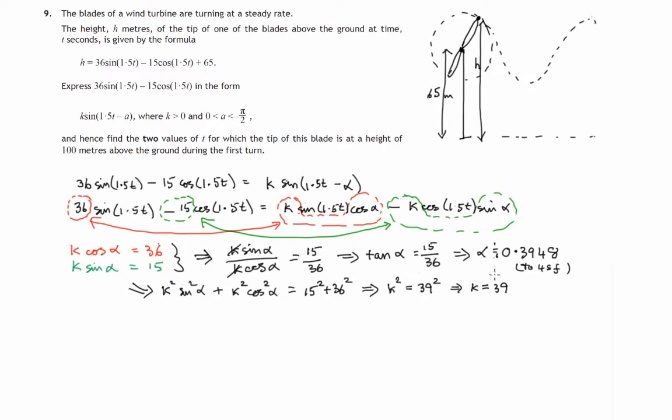We've found alpha and k, so we can now say that the height equals 39 times sin of 1.5t minus 0.3948. We're asked to find two values for t, so that's the height plus the 65 I'd forgotten about. We'll have a 65 to add on there. All we did was take the first two terms and rewrite them in this form.